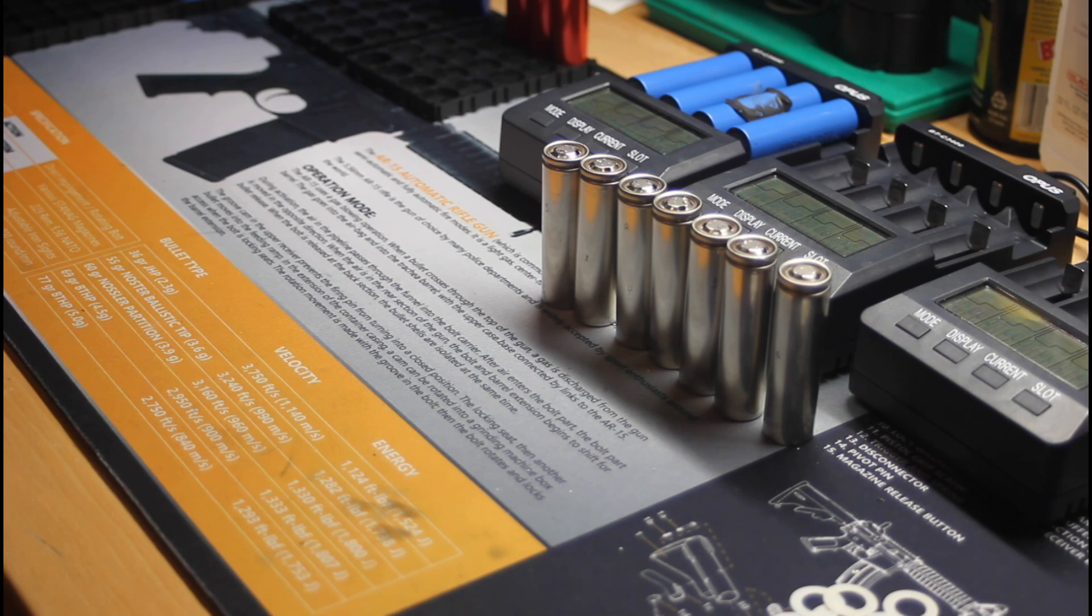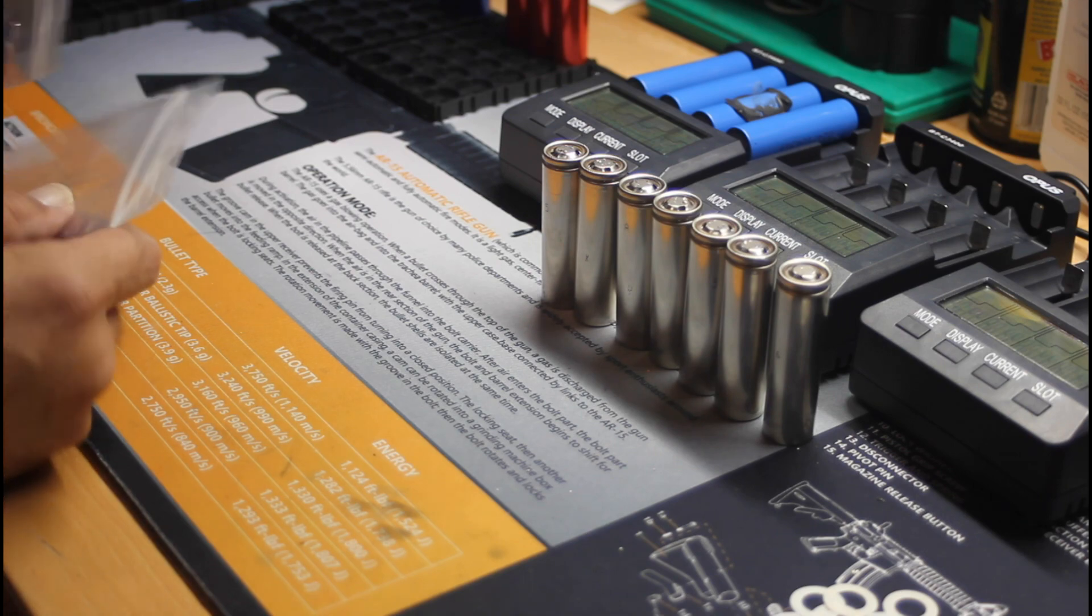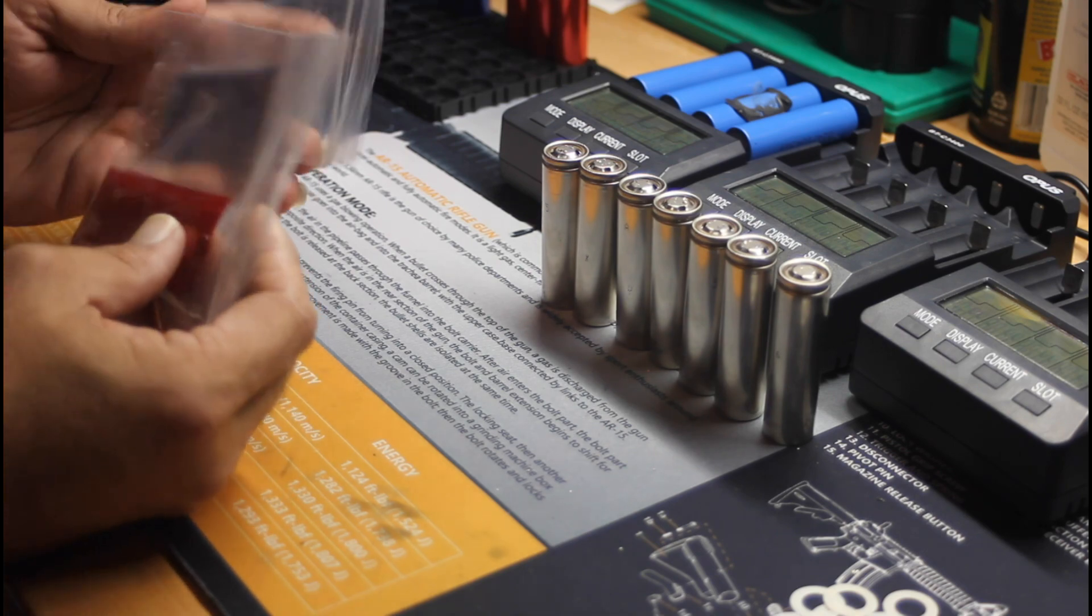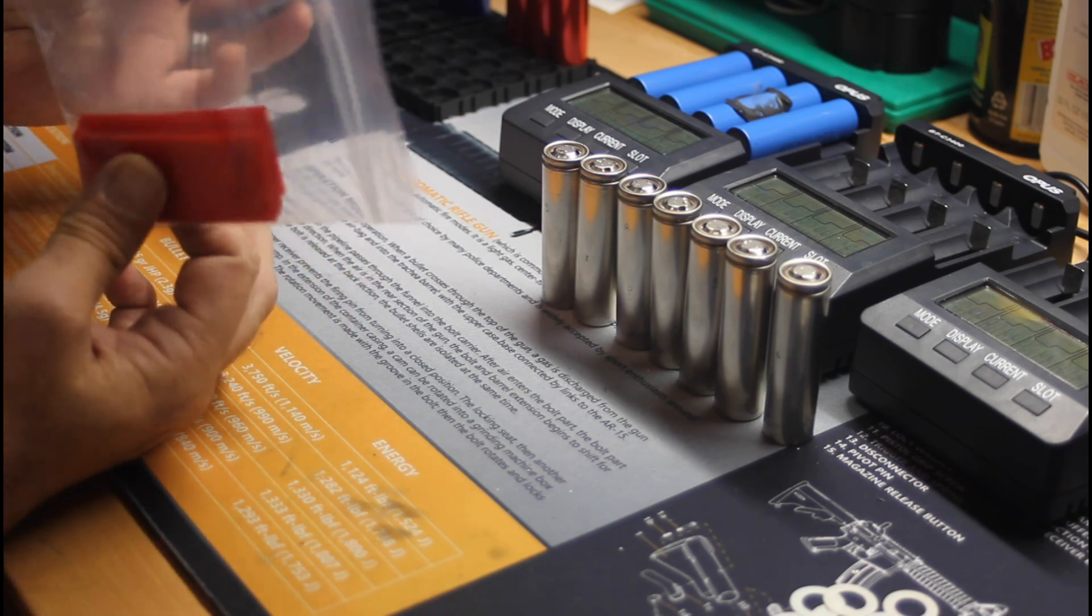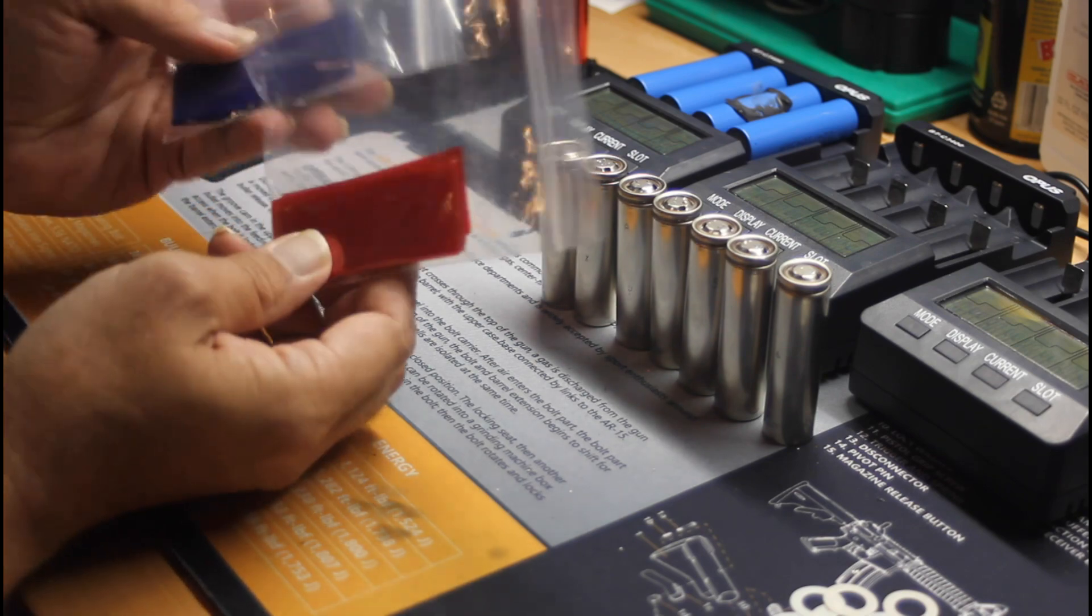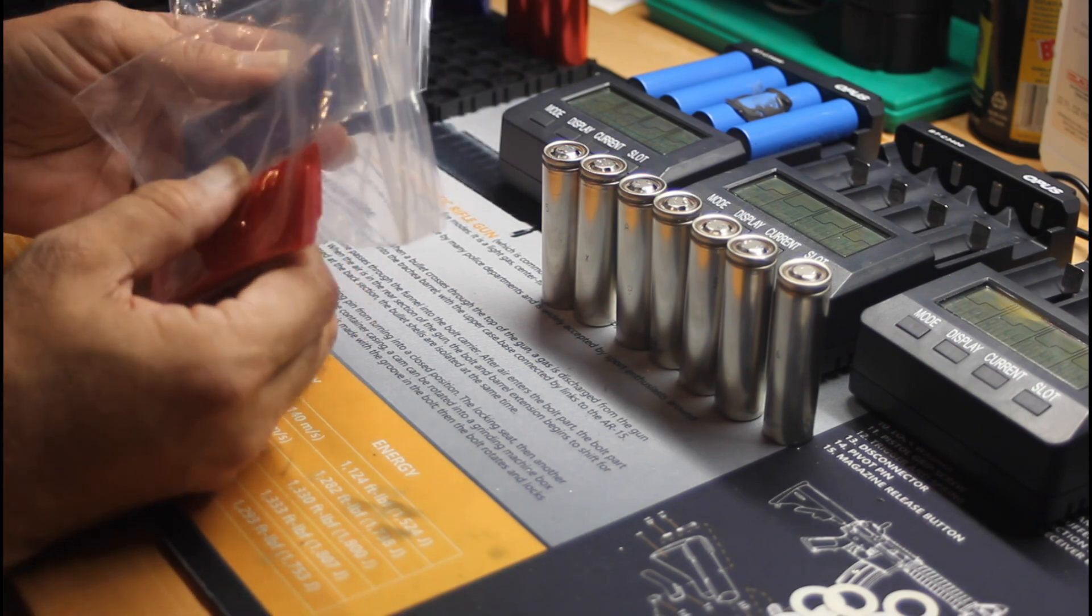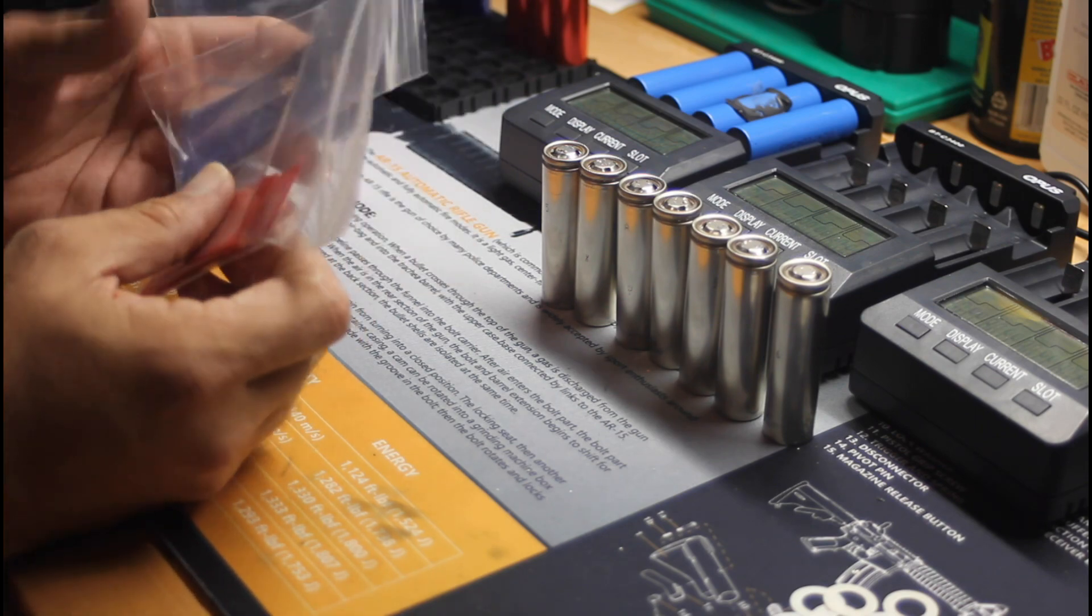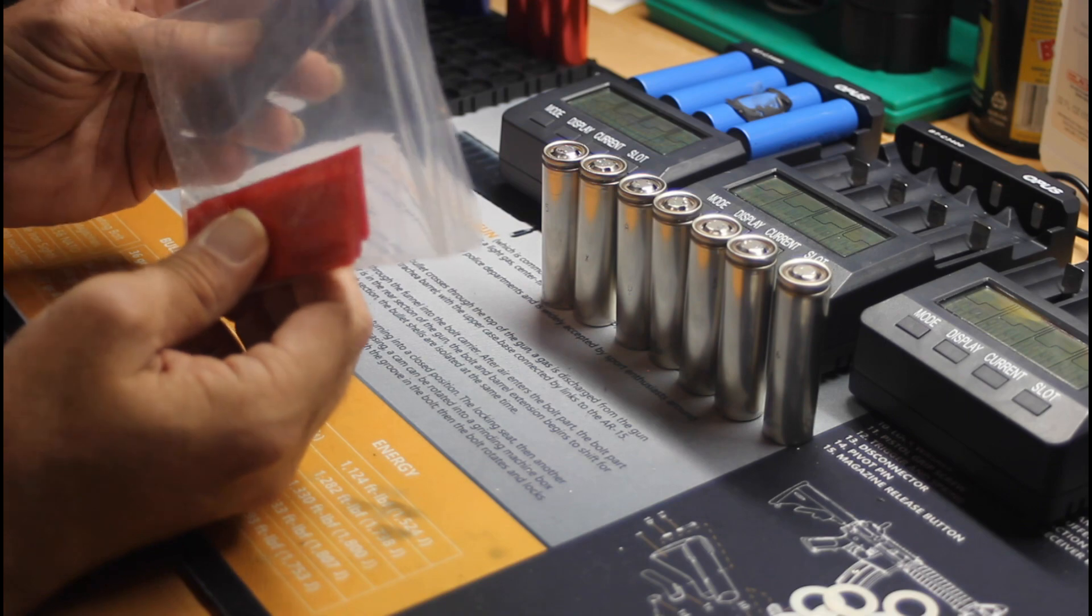Now we have our cells stripped down of their factory plastic. And now we have to grab our shrinks. I personally get mine from 18650 Shrink. That's Keith in the Facebook group.